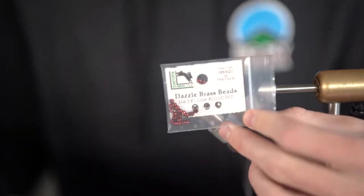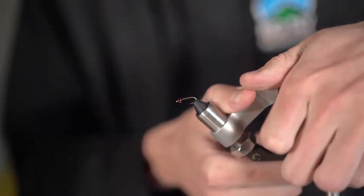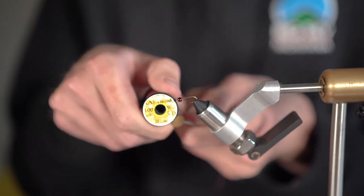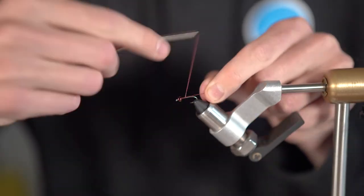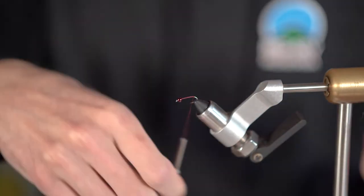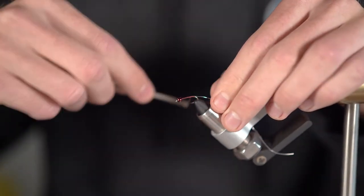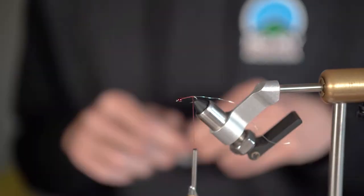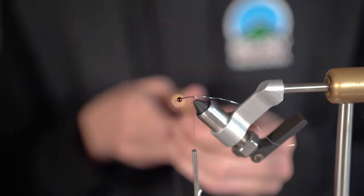First put your beadhead onto the hook and firmly clamp it down into your vise. Then grab out your 3-0 thread, preferably black or red, and wrap from just behind the head to just before the bend of the hook and snip off the excess. Then grab out your spool of silver wire and cut a 1 to 2 inch piece off and tie that in.